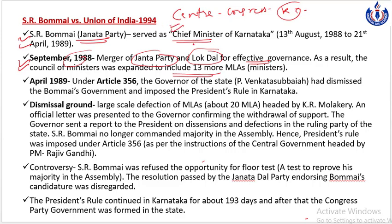So there were ideological differences. After eight months, April 1989 mein Karnataka ke Governor Mr. P. Venkat Subhaiya ne Bumai government ko dismiss kar diya. Ab question uthta hai ki Governor ne aisa kyun kiya. So dismissal ground ko explain karte huye, Governor ne confirm kiya tha ki coalition government mein severe differences the. 20 MLAs ki ek team ne mass defection kiya tha, aur in 20 MLAs ne signed letters Governor ko handover kiye the, jisme unhone confirm kiya tha ki they no longer supported SR Bumai government.